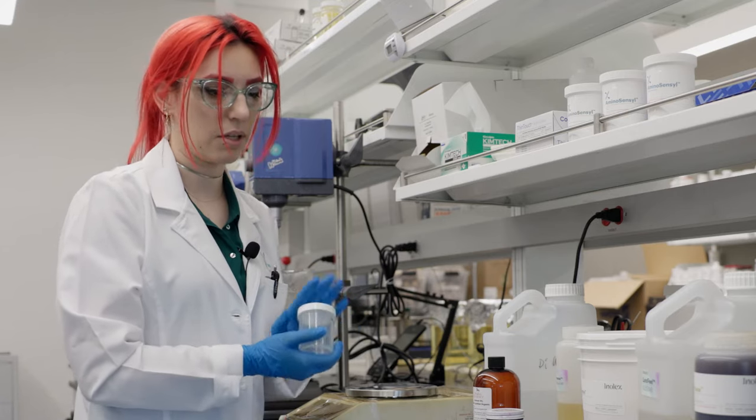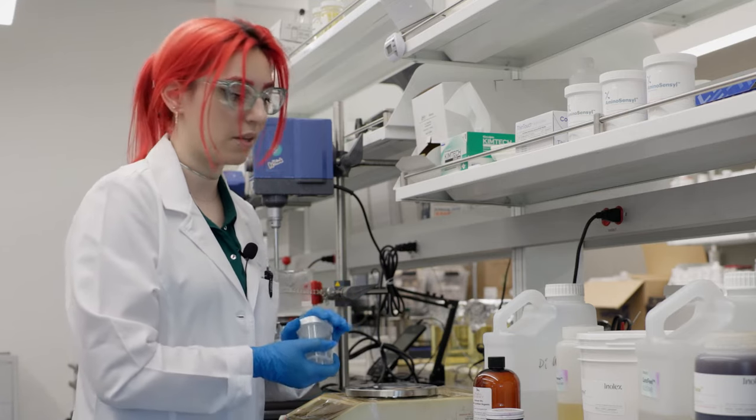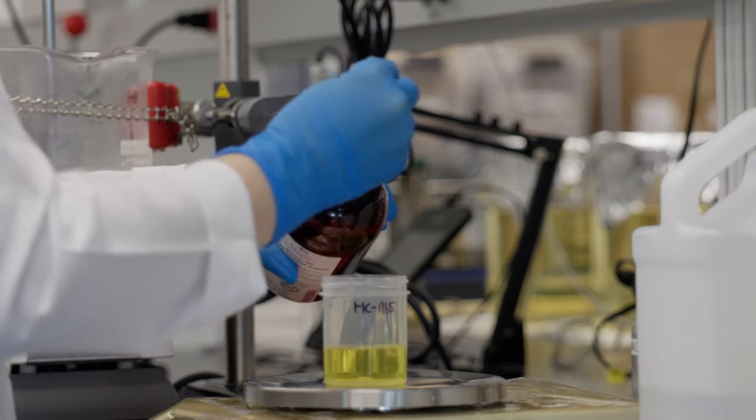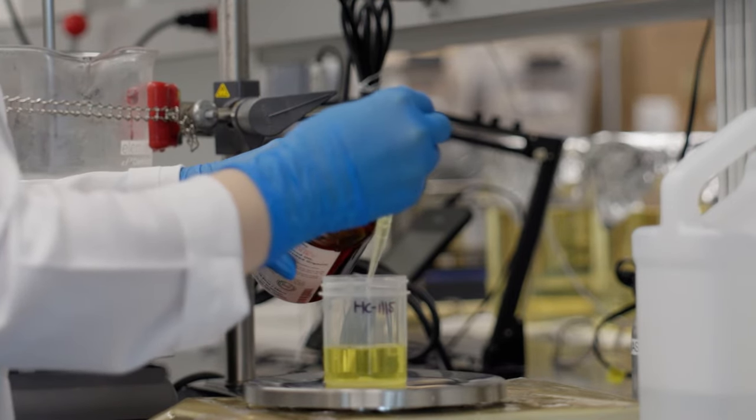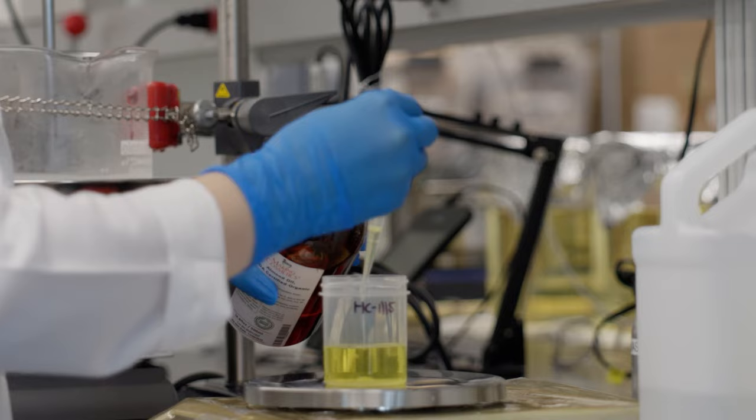So this is our Speed Mixer cup, so we're going to add the oil first and then our pigment. And almond oil is very nourishing for the hair, and it's kind of a lightweight oil, so this is why we're using it in this formulation.